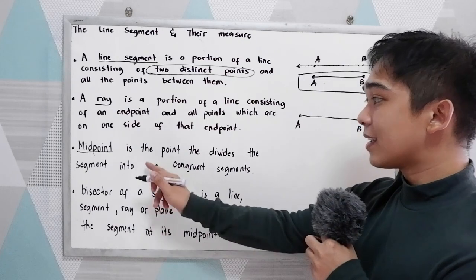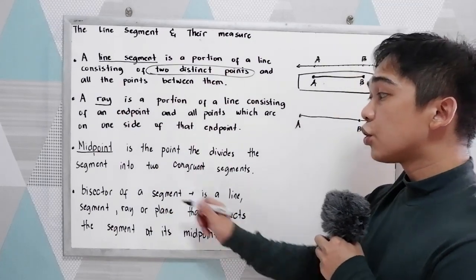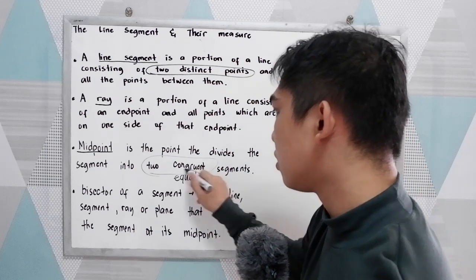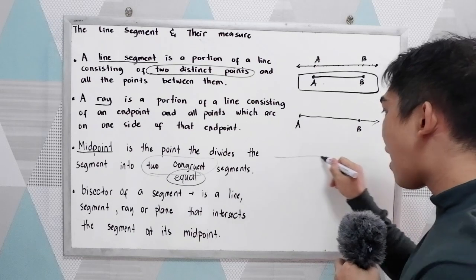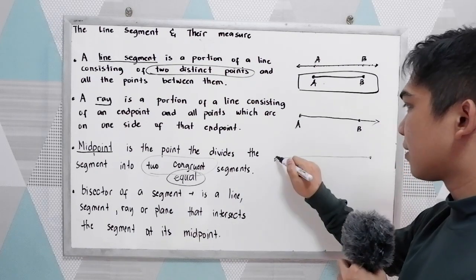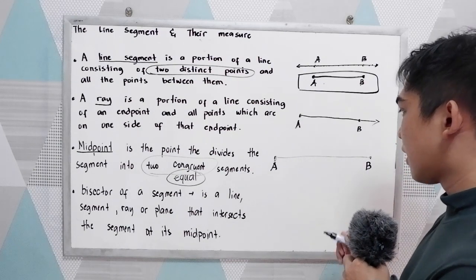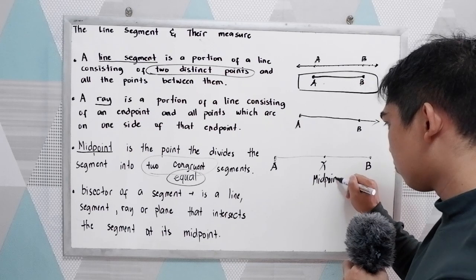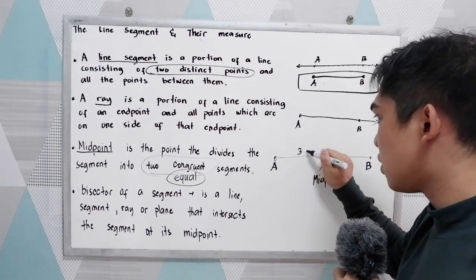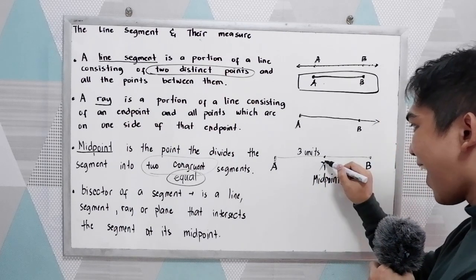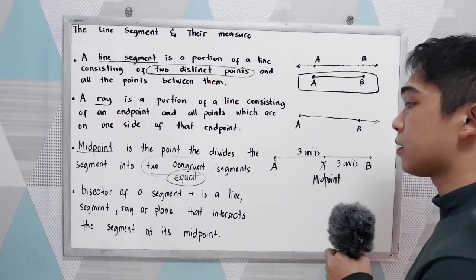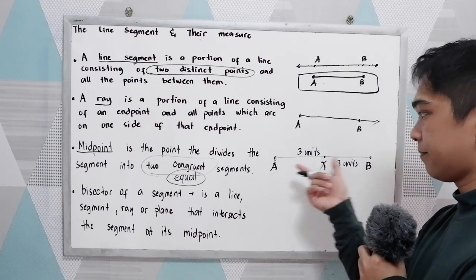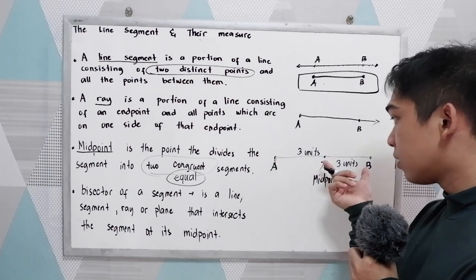Next, midpoint. It is the point that divides the segment into two congruent segments. When we say congruent, that is also referring to equal. So if we have segment AB and point X is the midpoint, that means AX measures three units; therefore XB also measures three units, because X divides the segment into two equal or congruent segments. So if this side is three, then this side is also three units.